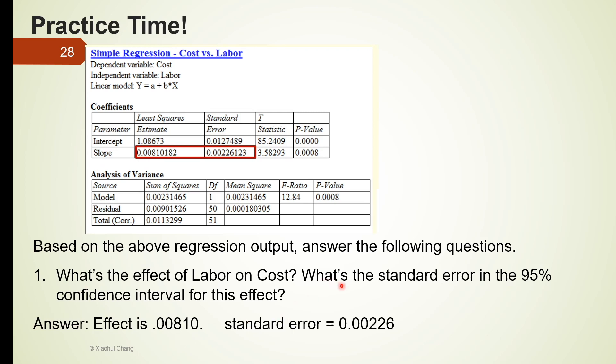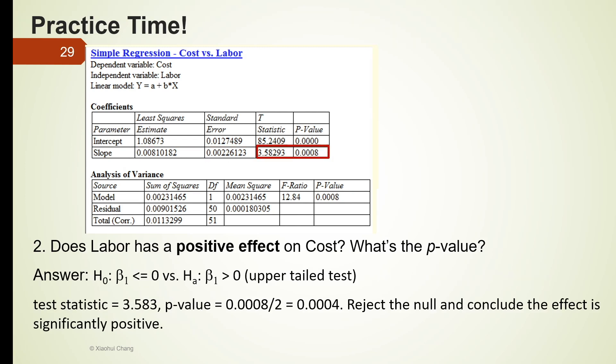Next, what's the standard error in the 95% confidence interval for this effect? Well, the standard error usually is given in the table. So it is 0.00226. So you can read all from the table right away.